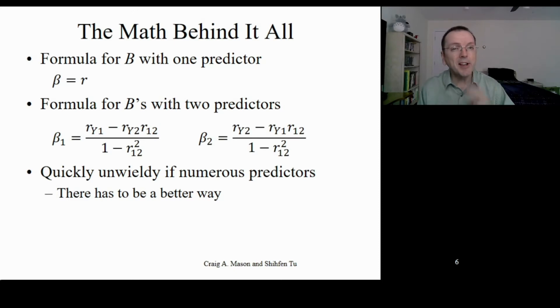That's a lot messier with only two predictors. As you can imagine, if you stick with basic algebra, the math gets completely unwieldy very fast with just a couple of additional predictors.